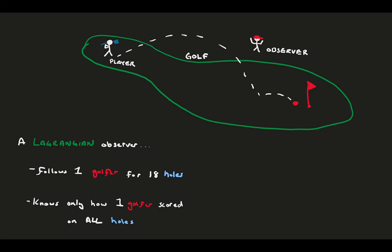If we were an Eulerian observer, we would sit at one single hole and we would watch all the golfers in the tournament play that hole. This means that in the end, we know how all the golfers did, but only on that single hole.